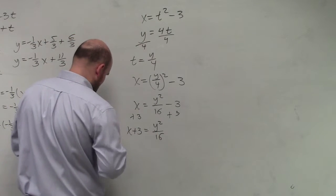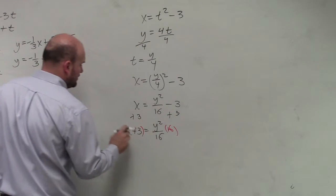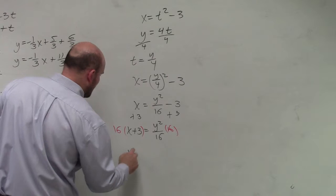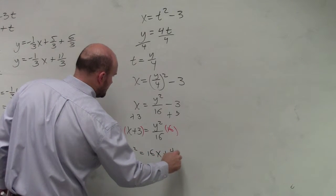Multiply by 16 on both sides. Just make sure you multiply the 16 times your whole expression. And I get y squared equals 16x plus 48.